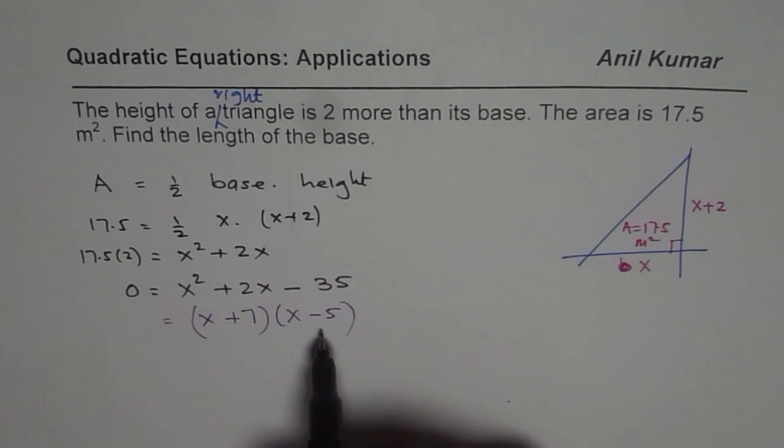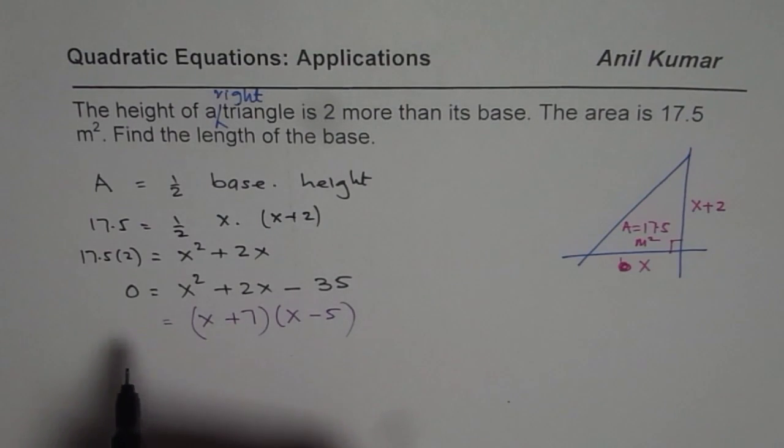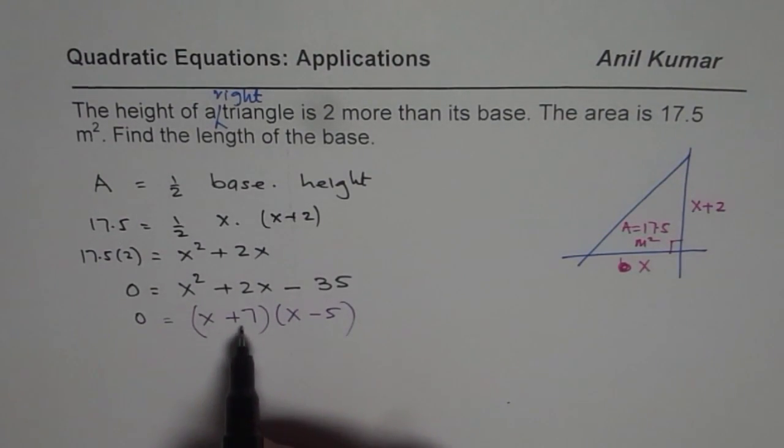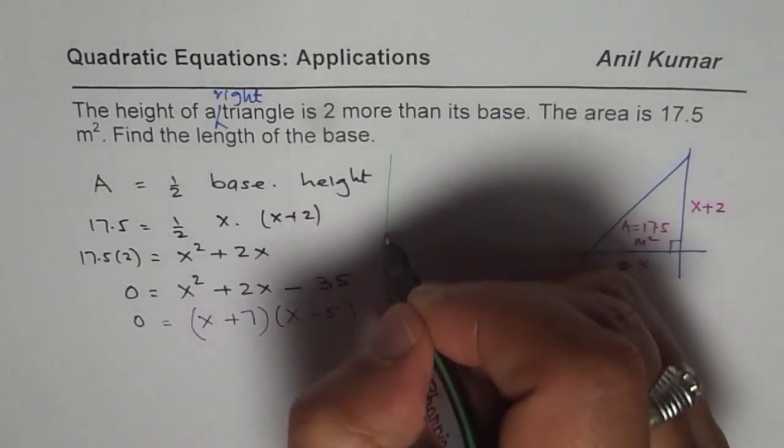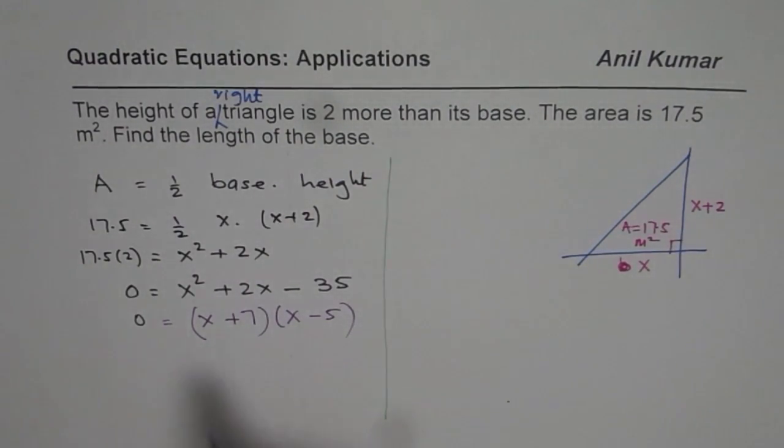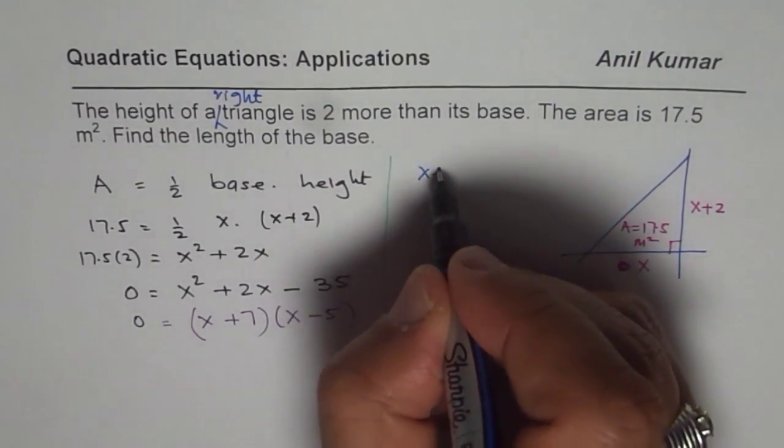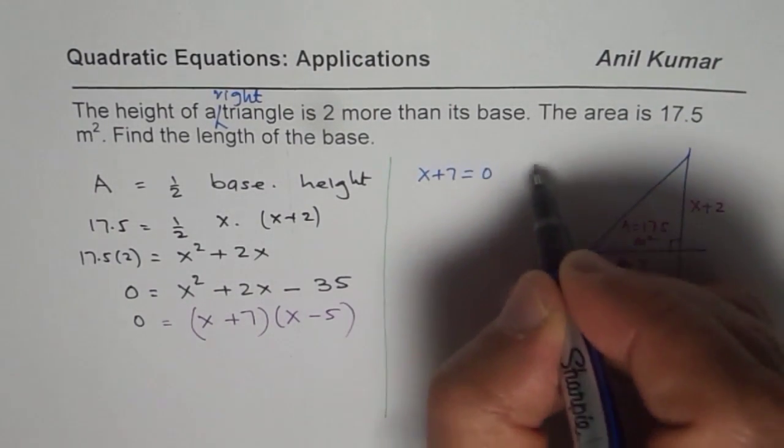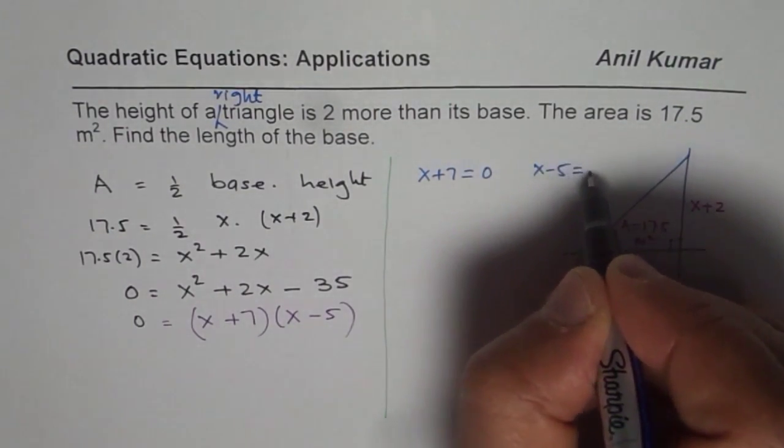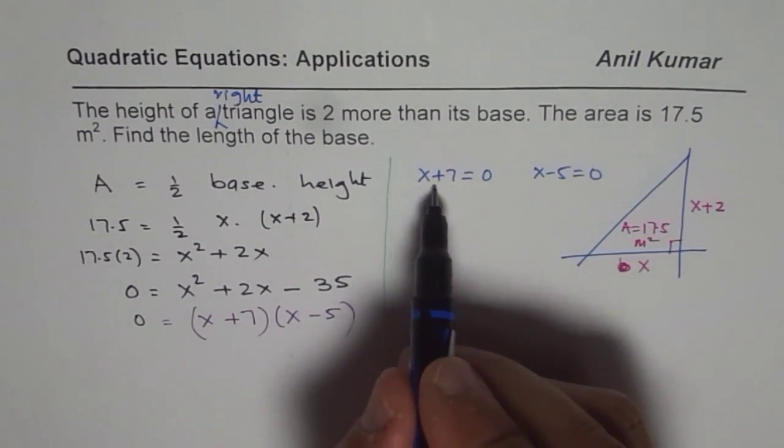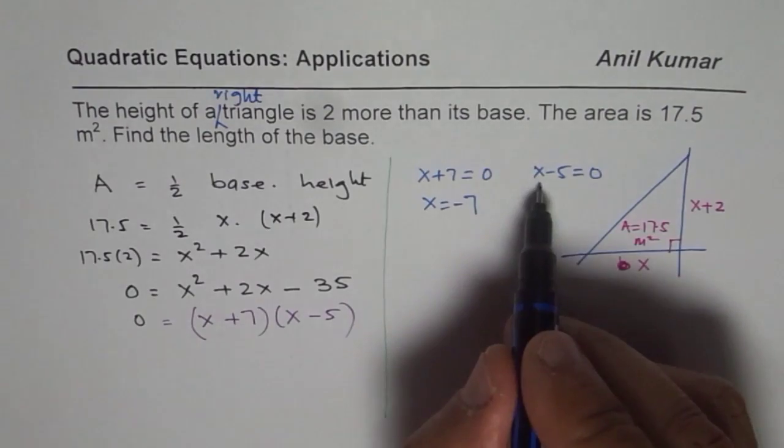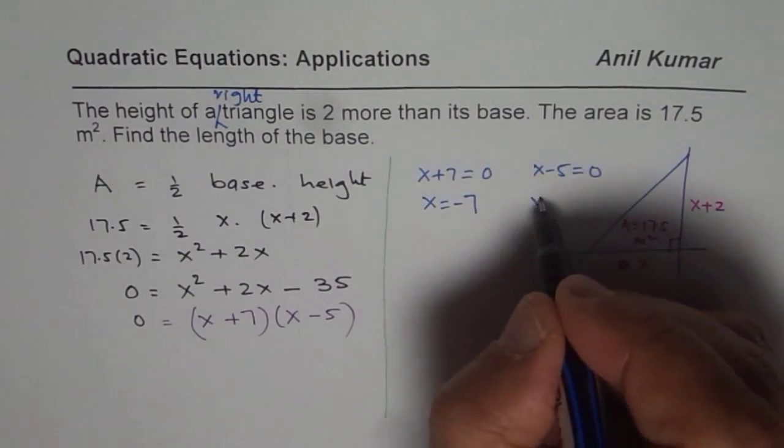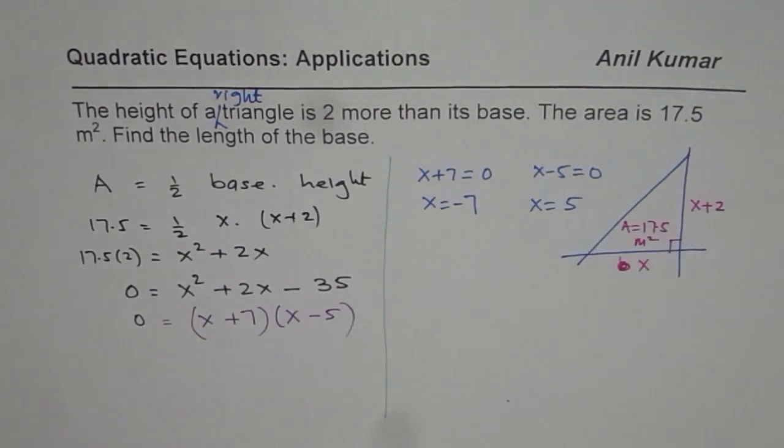Or you could use the quadratic formula to solve. So we get 0 equals (x + 7)(x - 5). That gives us the possibility of two different answers. Either x plus 7 equals 0 or x minus 5 equals 0. If x plus 7 equals 0, I get x equals minus 7. If x minus 5 equals 0, I get x equals 5.